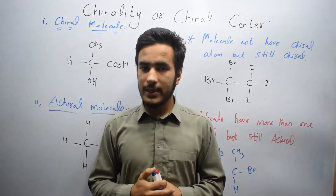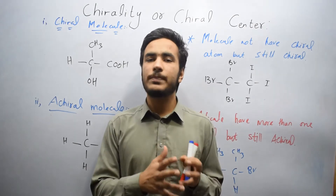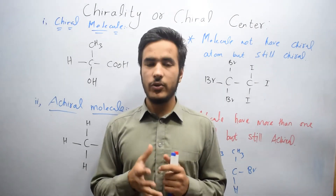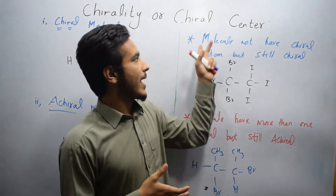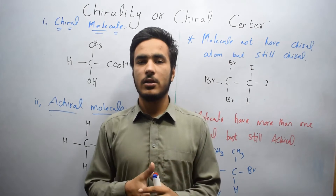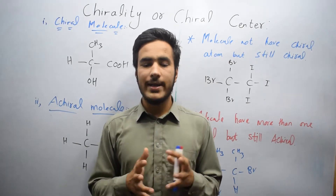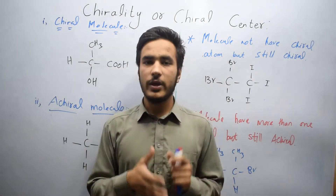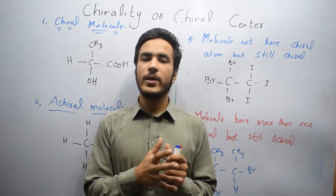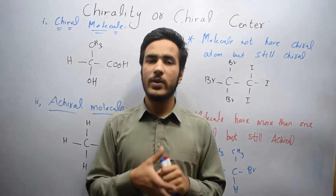Chirality is a geometric property of organic compounds due to the presence of a chiral center. A chiral center is a structural feature in a molecule which is responsible for its chirality — that is, responsible for the geometric property of the molecule.